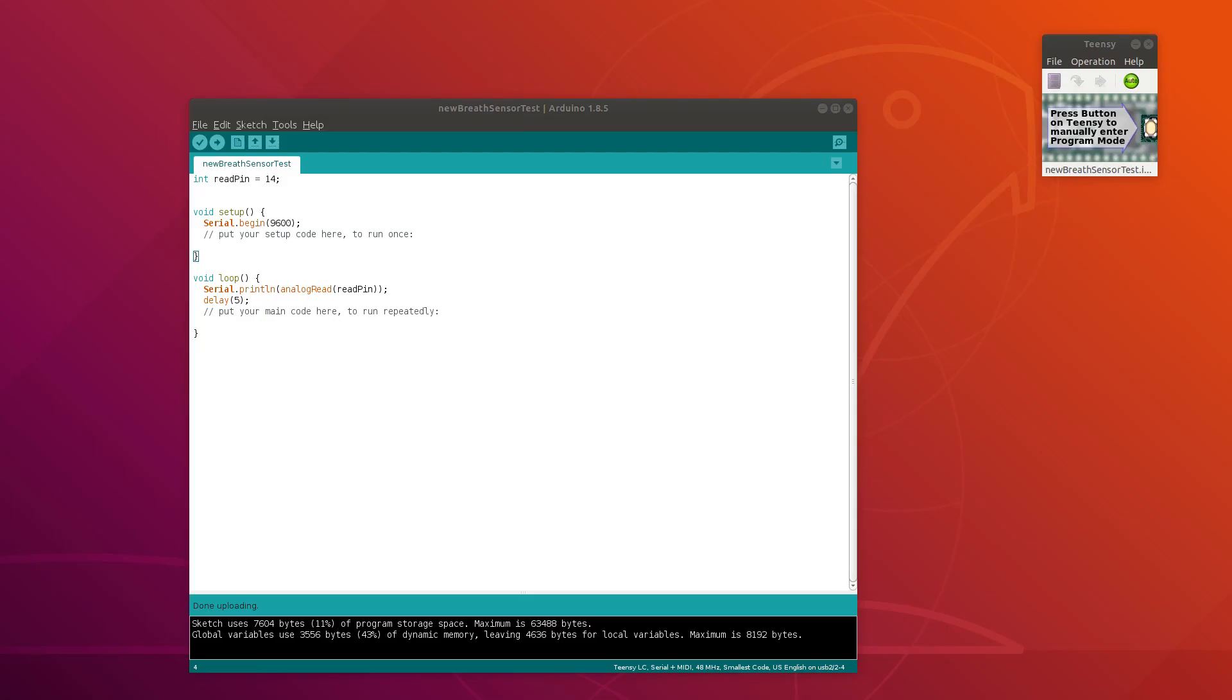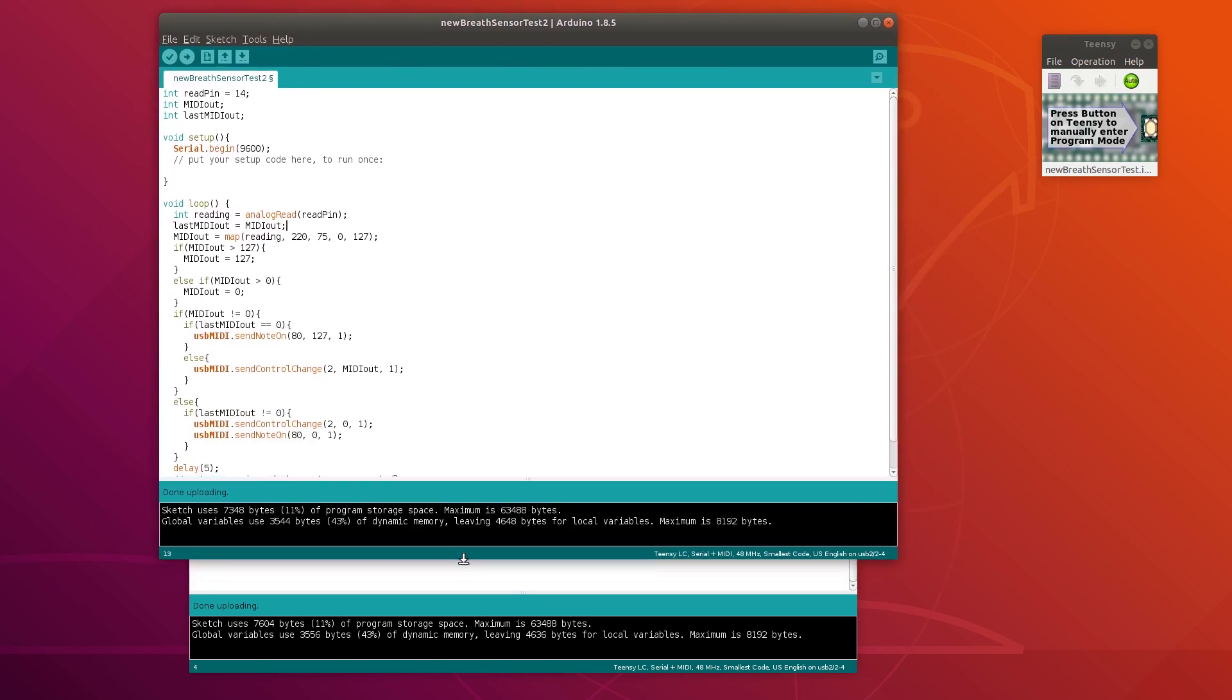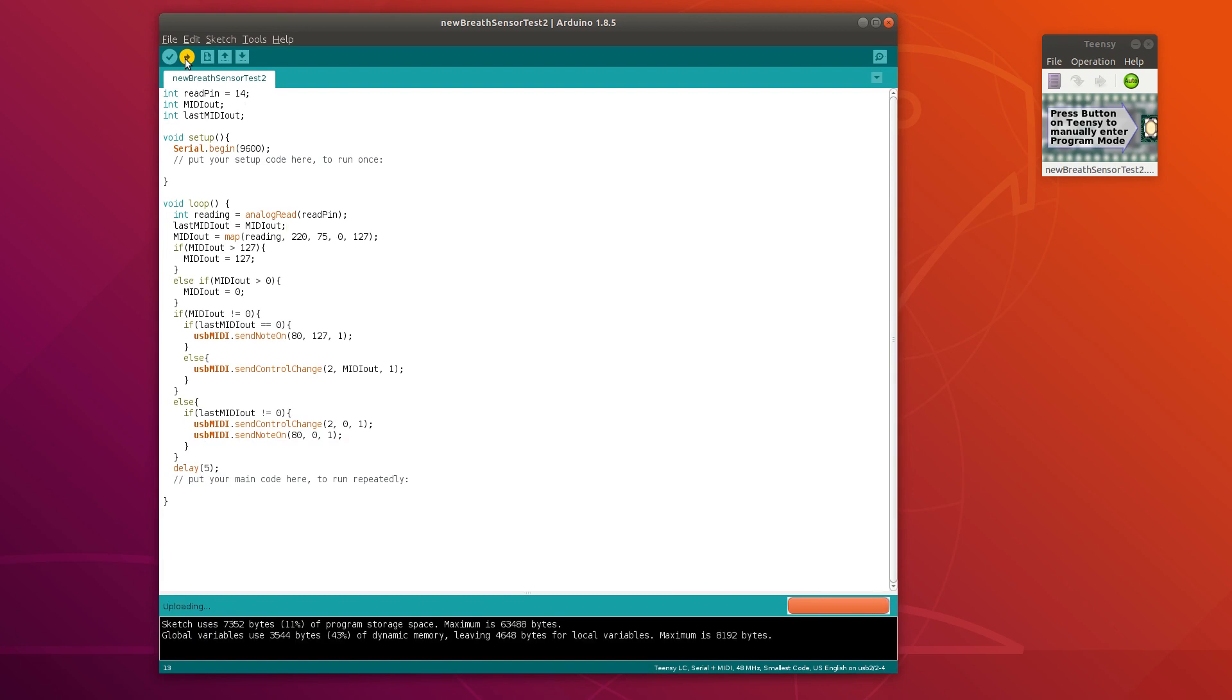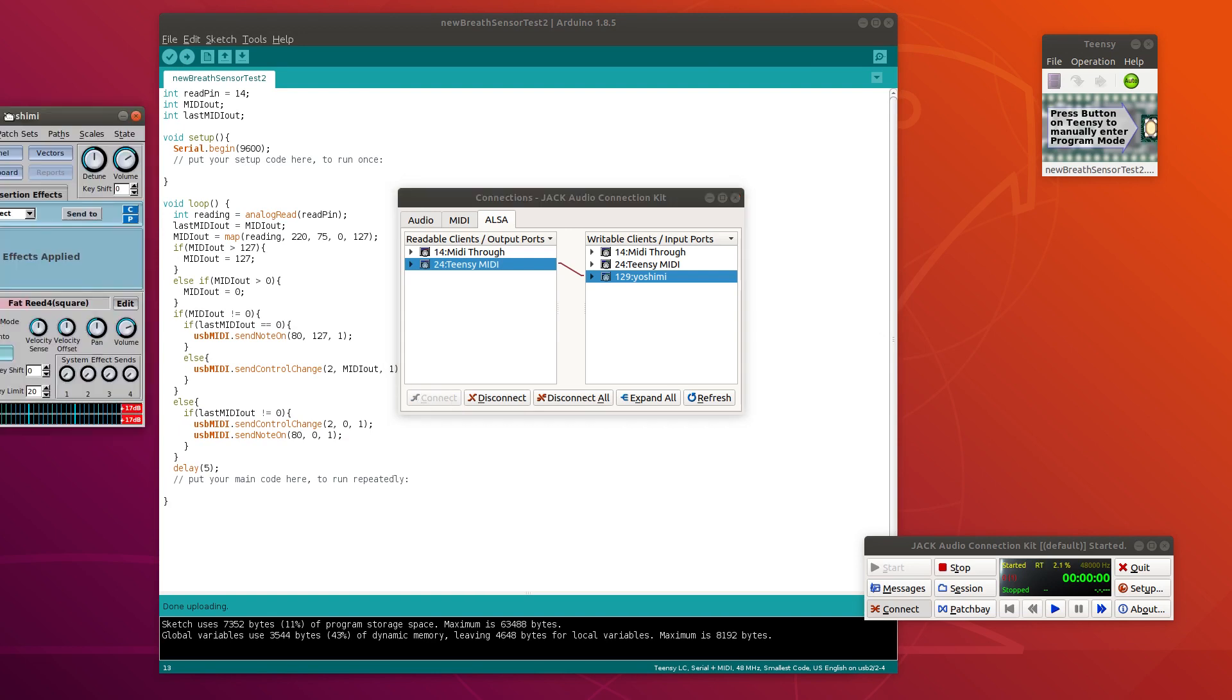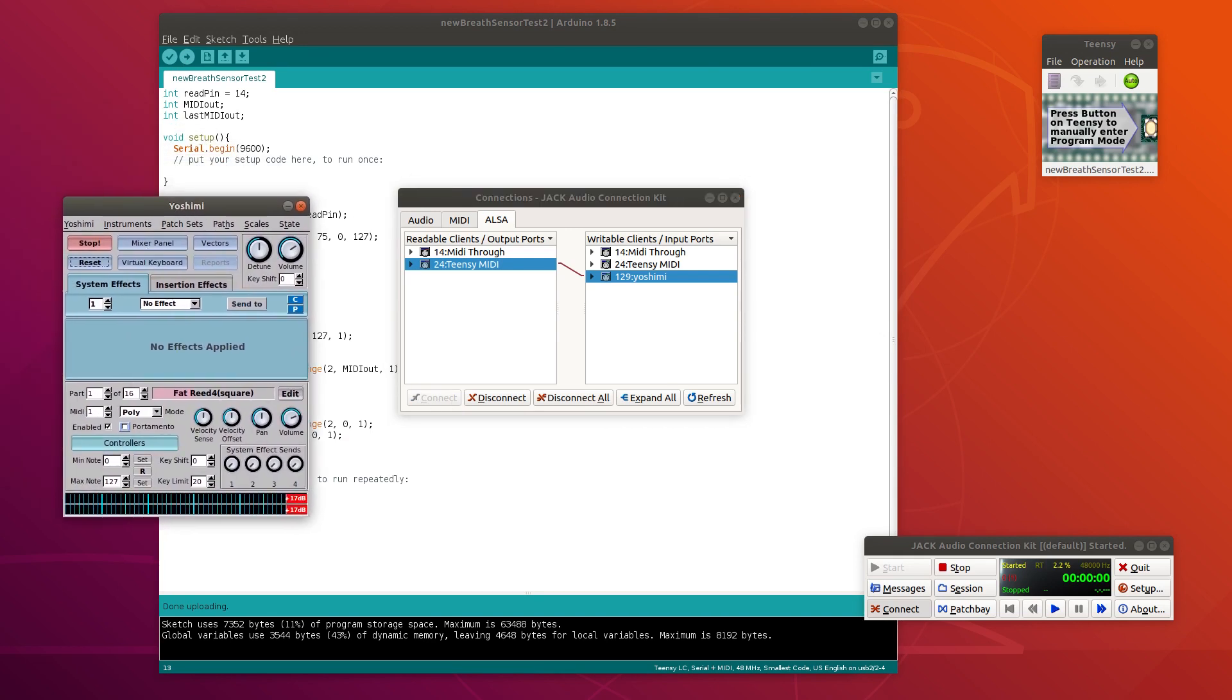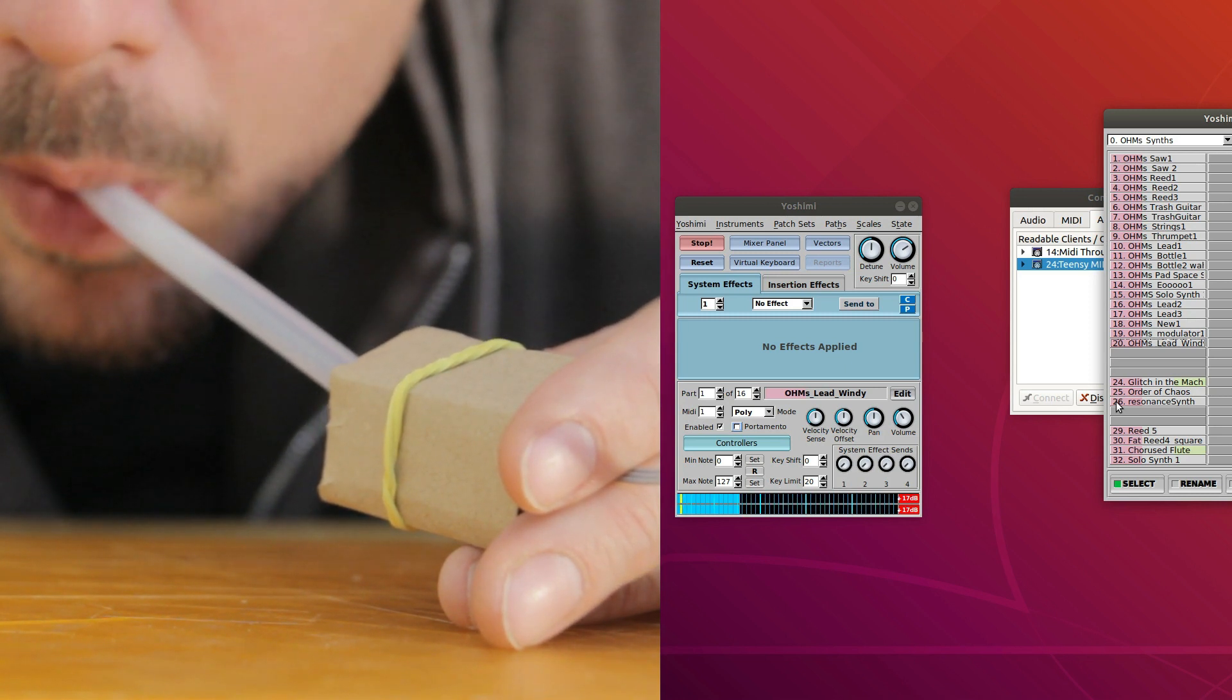Now let's try something more fun. Here's a slightly more advanced bit of code which takes the readings from the last example, maps them onto MIDI range and then outputs them to MIDI. Upload that, open up the Yoshimi synthesizer and connect everything together with Jack. Let's see if it works. Yes, it works just fine.